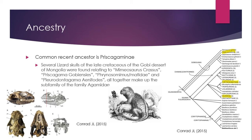The Prisca Agaminae is actually found in about three or four different species: the Mimeosaurus crassus, the Prisca Agama goviensis, the Priscagama metidae, and the Otidae. These species can actually make up this family of the Agamidae. However, it can be debated that the Prisca Agaminae is the one true ancestor that goes into the Agamidae family, which in turn leads to the Thorny Devil. It can also be debated that any of these four species is the most recent ancestor for the Agamidae lizard family.